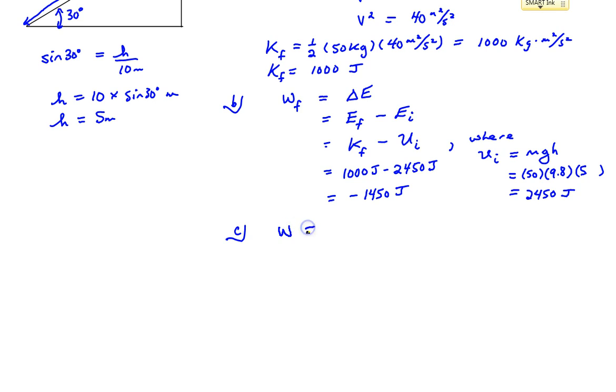The work formula says that it's equal to the force times the displacement times the angle between the force and the displacement. So this is not 30 degrees, by the way. The work done by friction equals the force of friction times the displacement times the cosine of the angle between the force and the displacement.